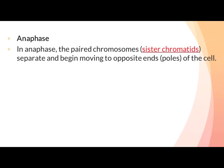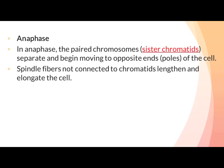Anaphase: In anaphase the paired chromosomes (sister chromatids) separate and begin moving to opposite ends of the cell۔ جیسے ہی anaphase start ہوتا ہے، paired chromosomes یعنی sister chromatids centromere کی position پر ایک دوسرے سے separate ہونا start ہو جاتے ہیں۔ Spindle fibers کی pulling force centromere کو مجبور کرتی ہے کہ sister chromatids کو ایک دوسرے سے الگ کرے، اور homologous pair of chromosomes opposite poles کی طرف روانہ ہو۔ Spindle fibers not connected to chromatids lengthen and elongate the cell.